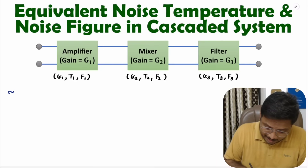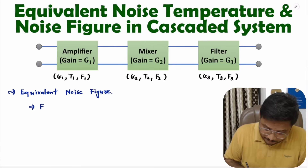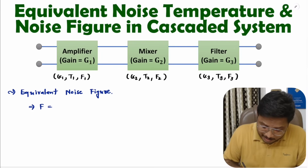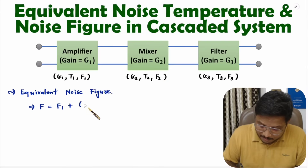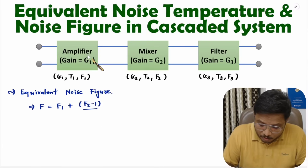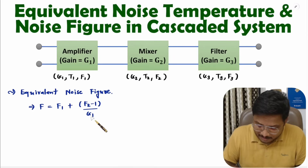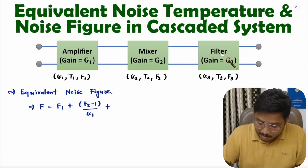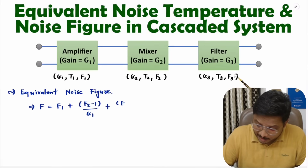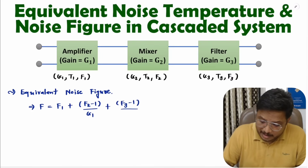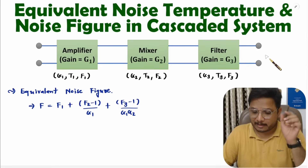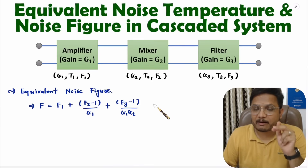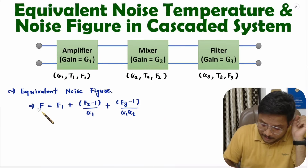Let me explain the equivalent noise figure first. If the equivalent noise figure is F, then it will be the noise figure of the first block, F1, plus F2 minus 1 divided by the gain of the preceding block G1, plus F3 minus 1 divided by G1 times G2. If you have a fourth block, then you add F4 minus 1 divided by G1 times G2 times G3. That is how equivalent noise figure is calculated.